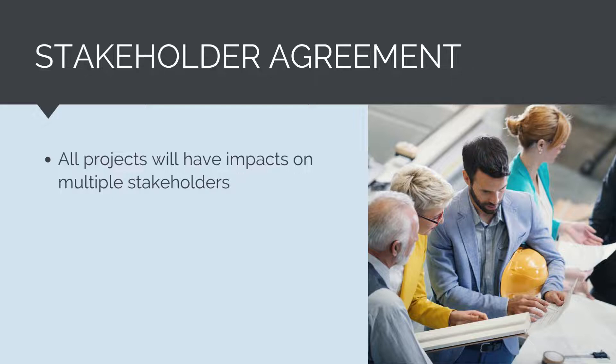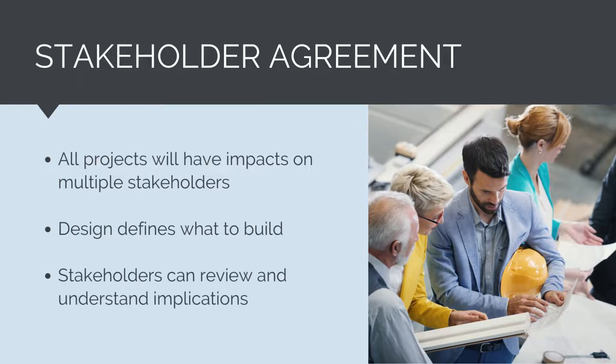For example, maintenance access requirements need to form part of the building, or local community members may be upset about a project's proposal to remove existing trees and vegetation. The design defines what to build, and stakeholders will review the design packages prior to construction so agreement can be reached on what the project proposes to deliver. Through the design development process, stakeholders will review and make comments, and these comments will be integrated into the final product that is to be built.